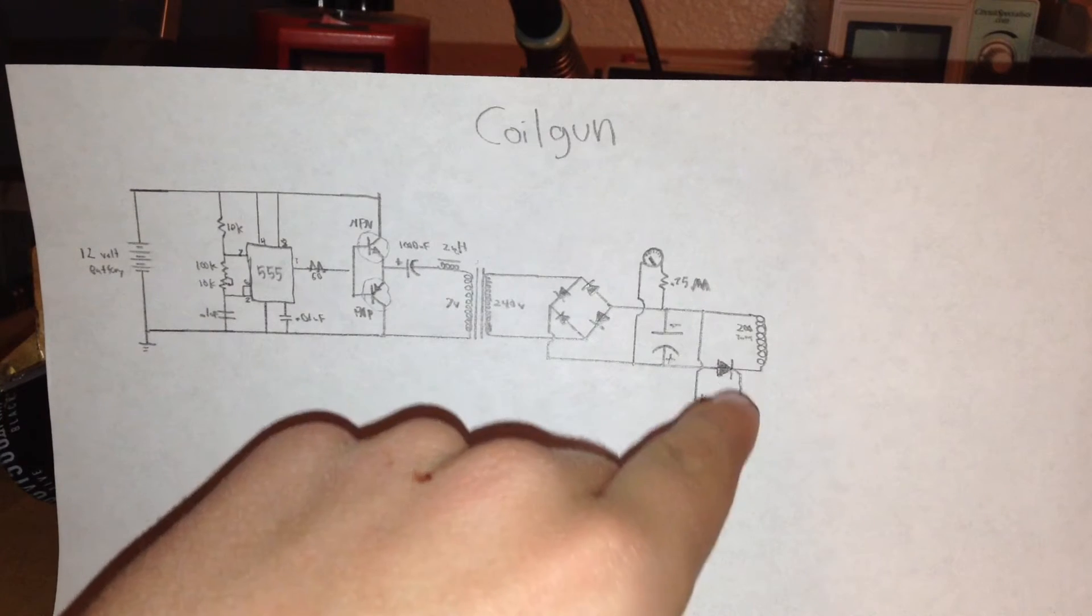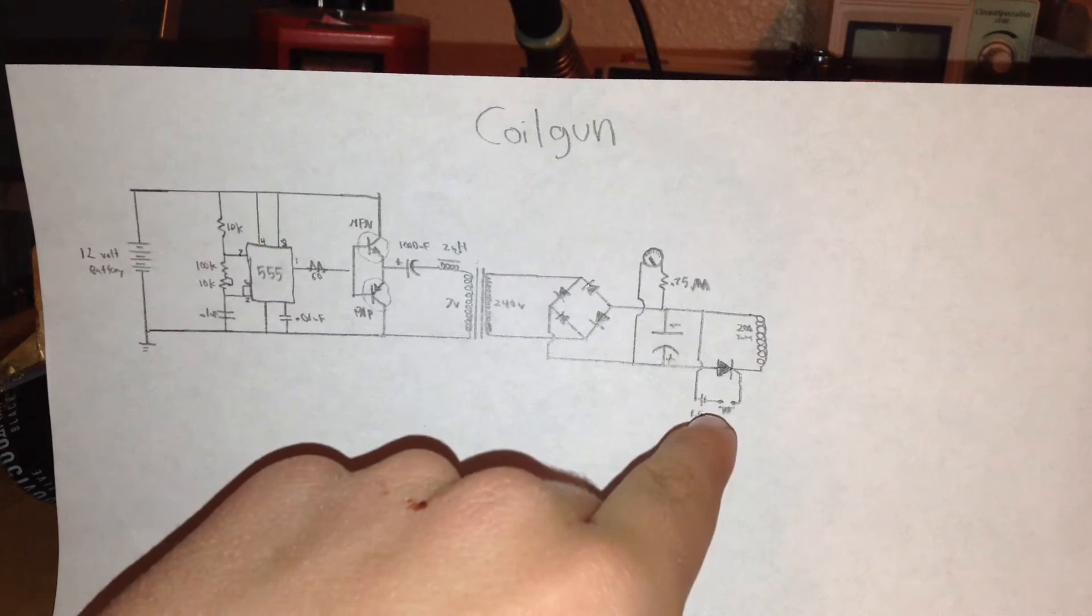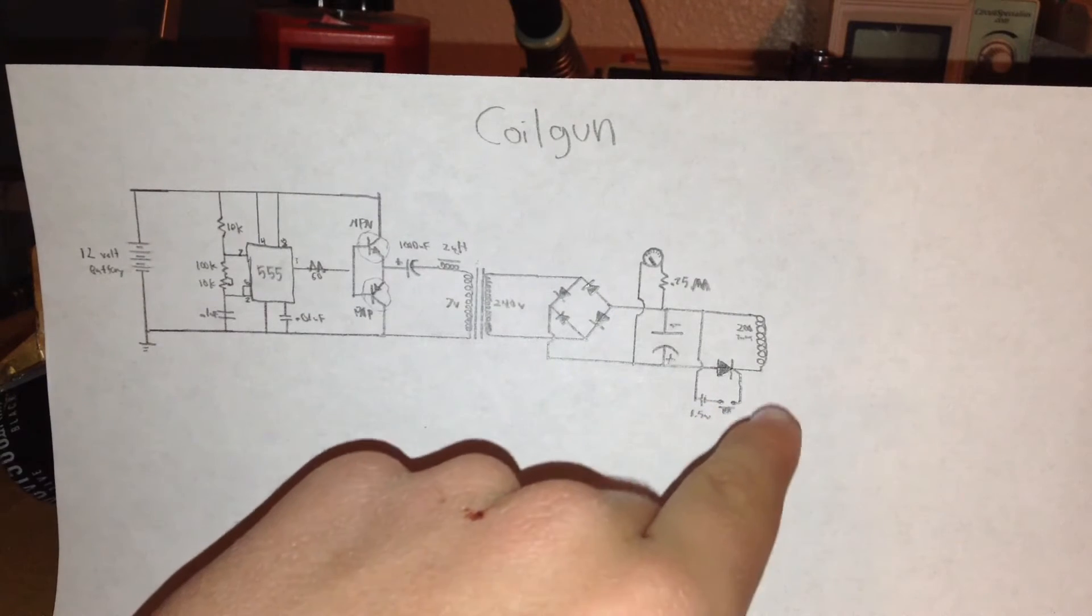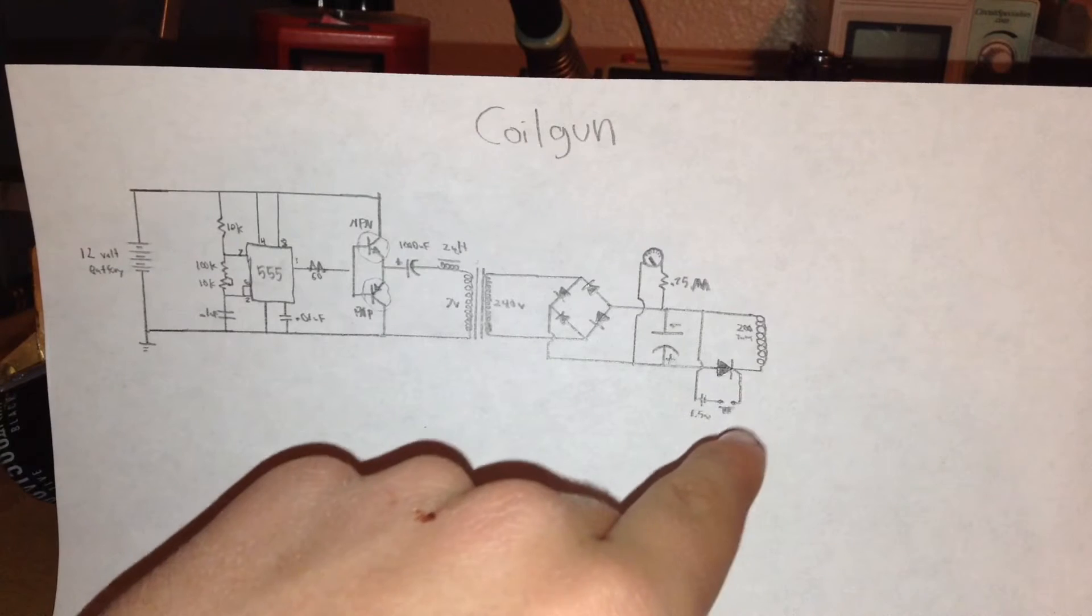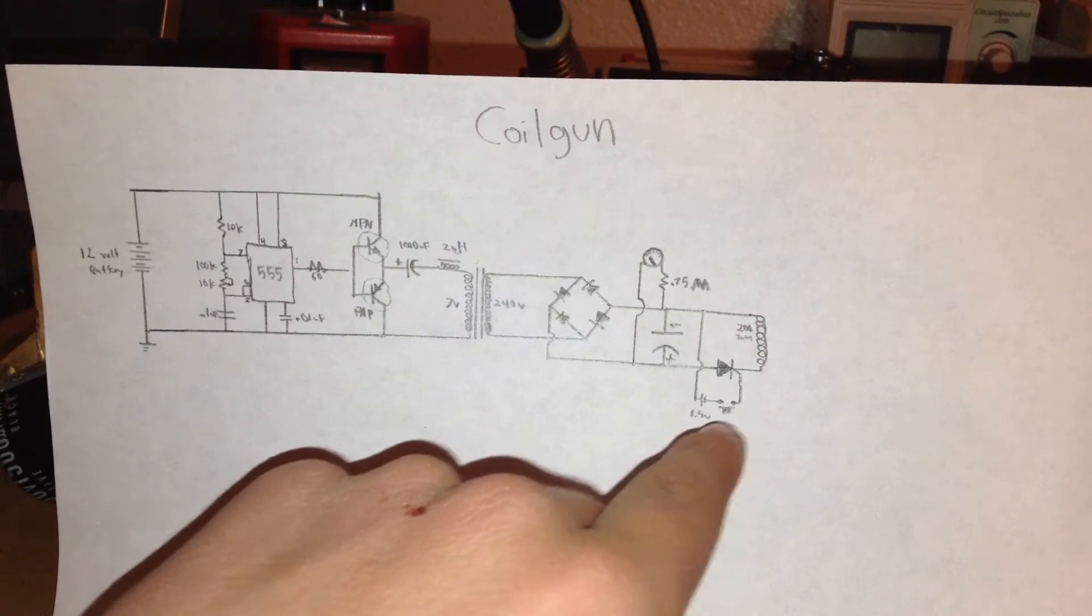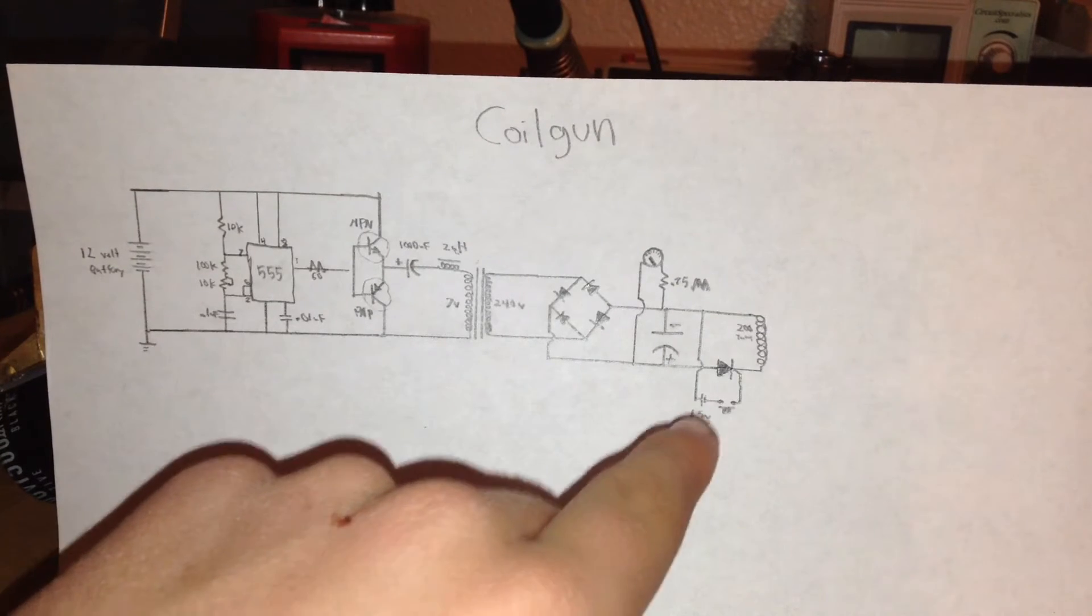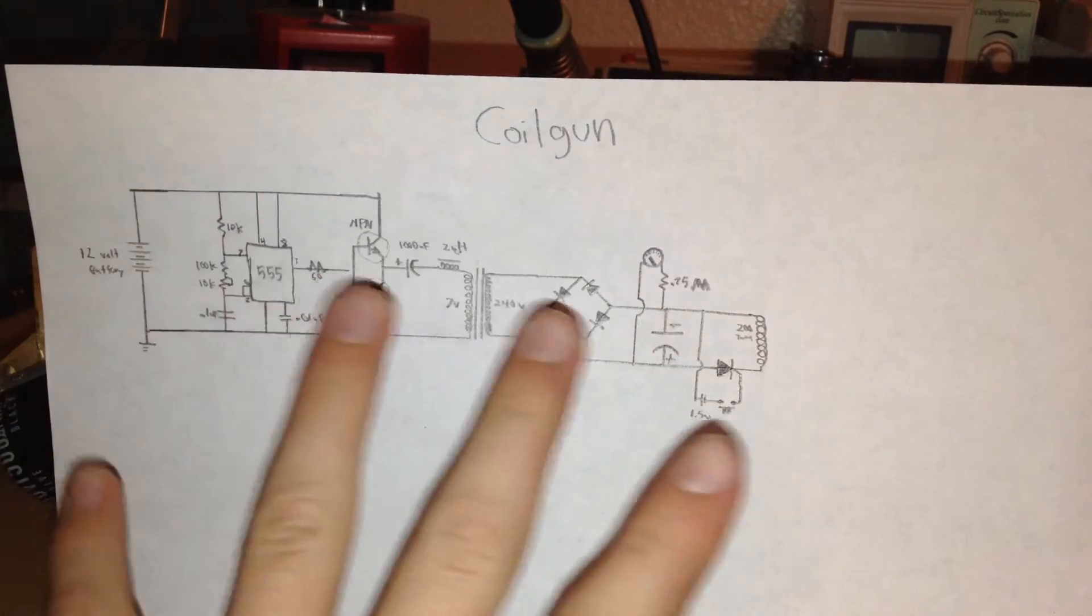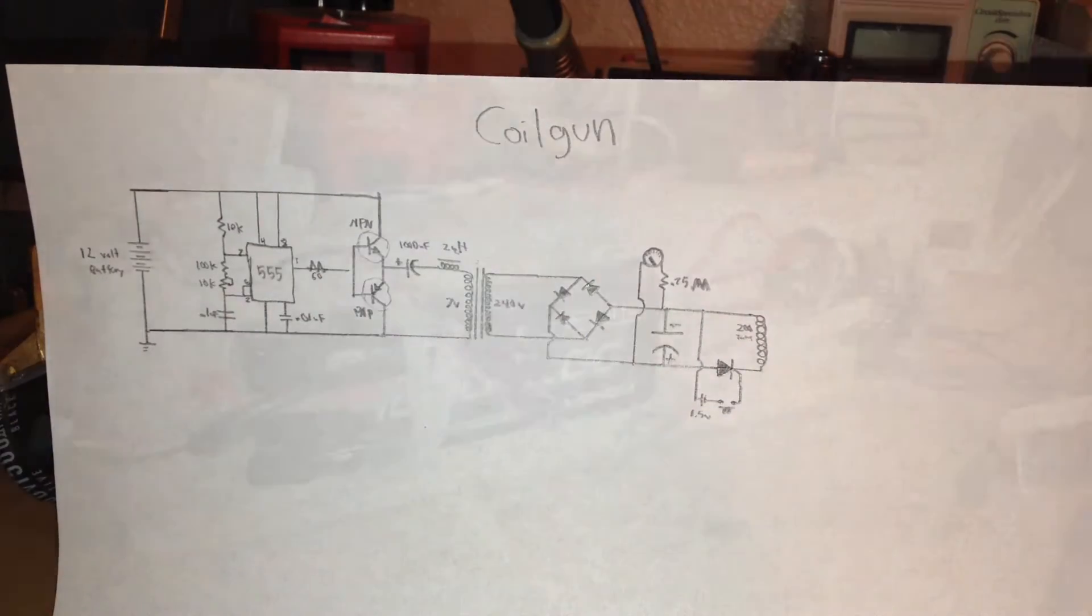This silicon-controlled rectifier is powered by a small 1.5 volt button cell battery. The power then flows through a push-button switch to activate the SCR and release all the energy. So this is how my coil gun works.